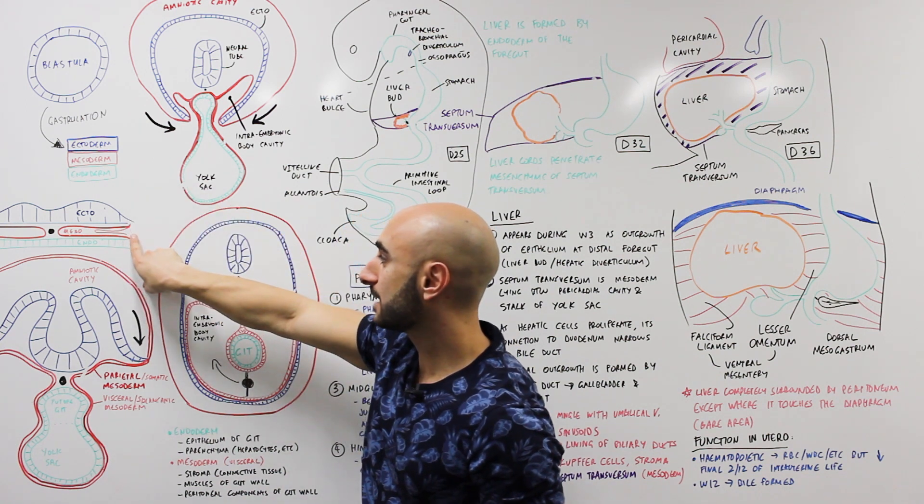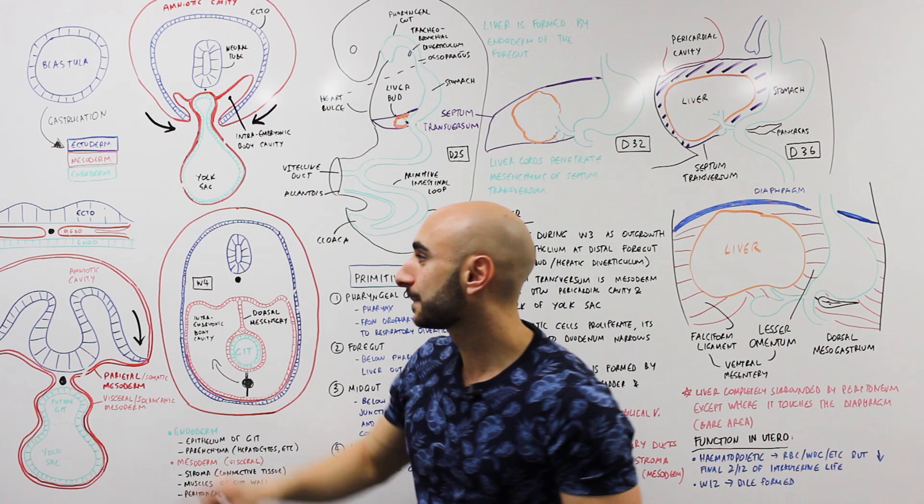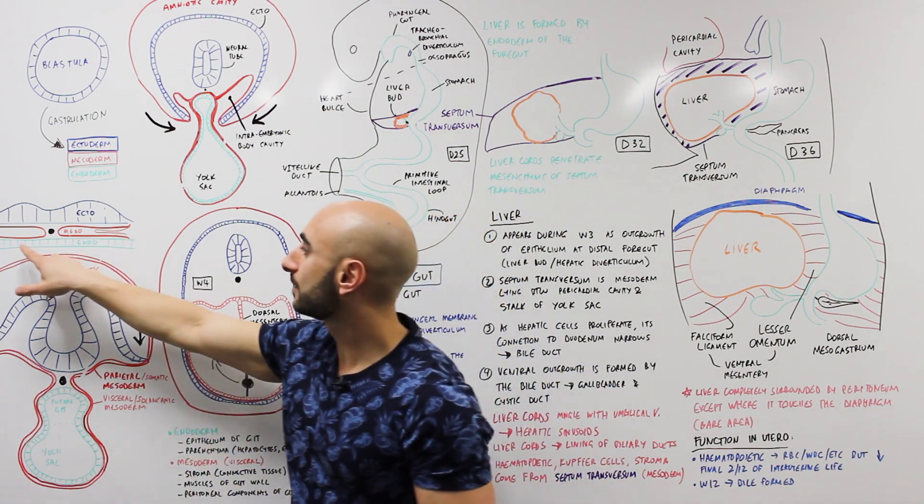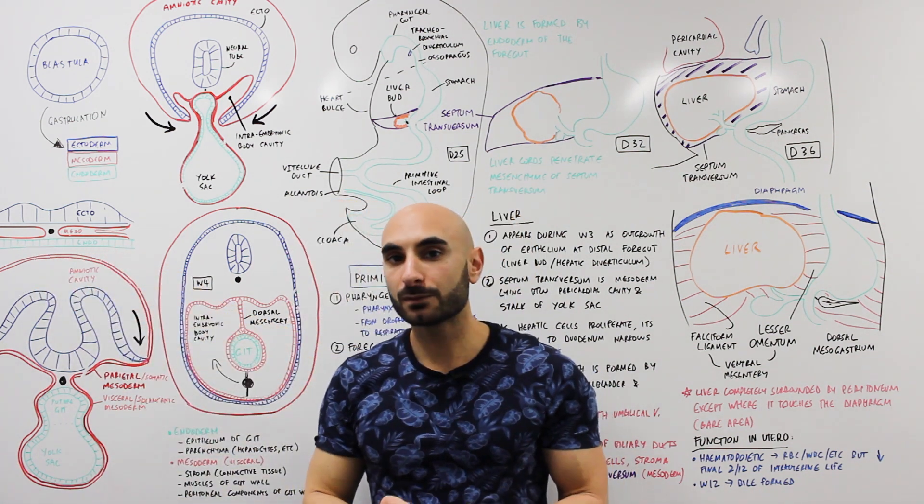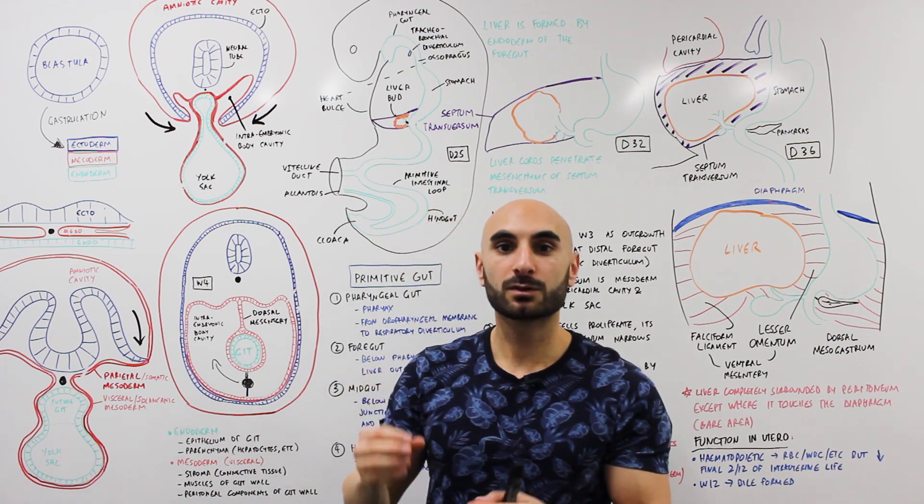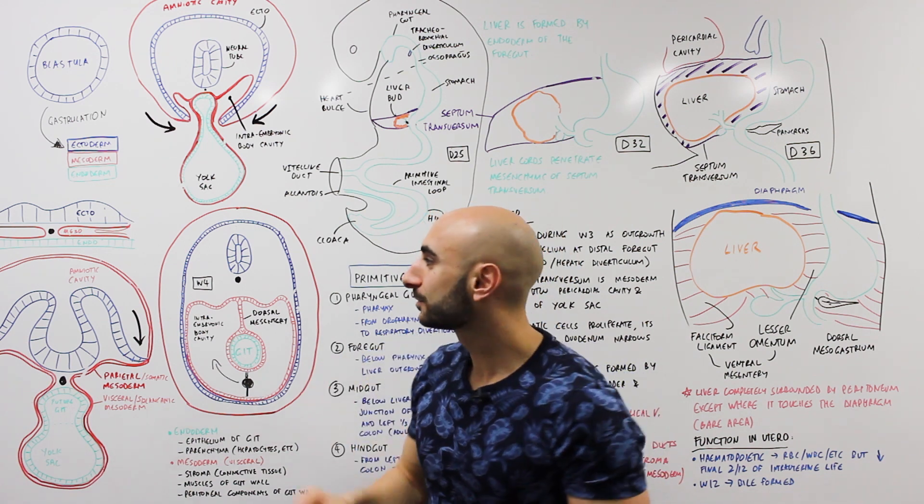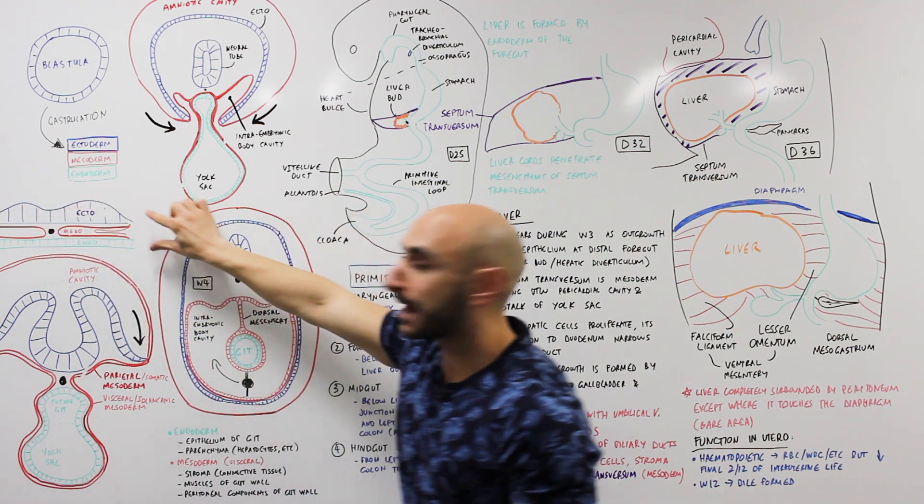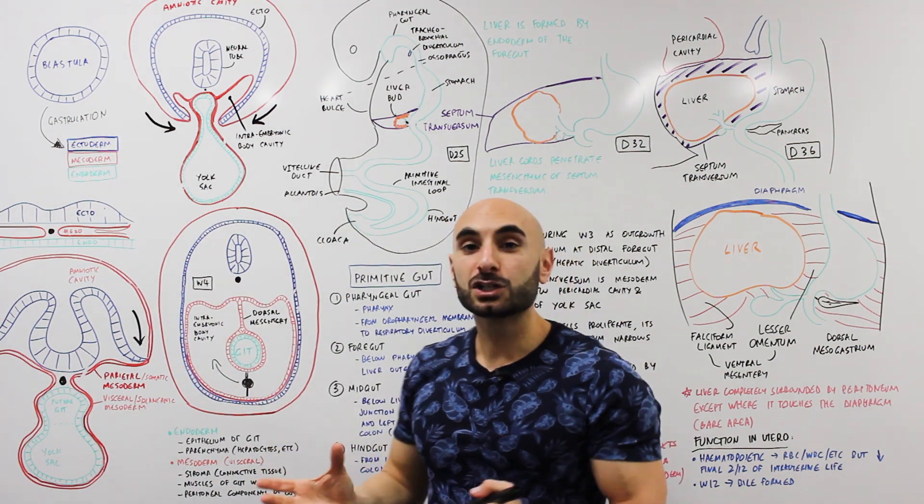The focus of today's video will mostly be on the endoderm because the liver bud begins as an outgrowth from the endoderm. But this is a flat pancake looking thing and eventually will become a tube.